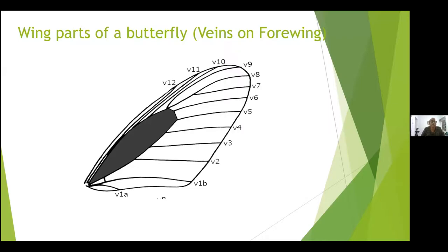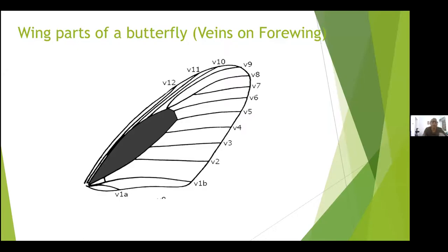The cell is dark colored — you can see it in between. There's a cell here, and this is V1A and 1B, and V2, V3, V4, V5, V6, V7, V8, V9, V10, V11 and V12. These are the 12 veins present in a forewing. I will not go into much detail of this. Just keep it in mind — it may be helpful in further slides.